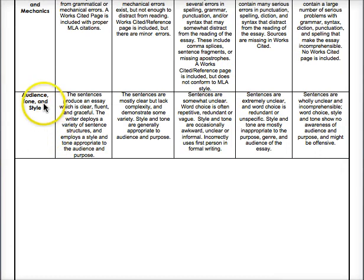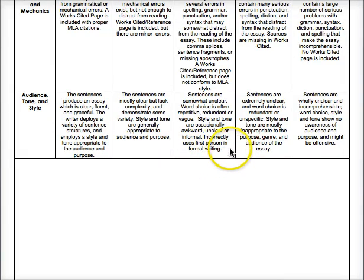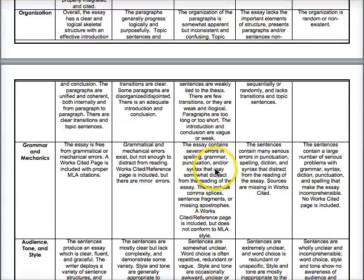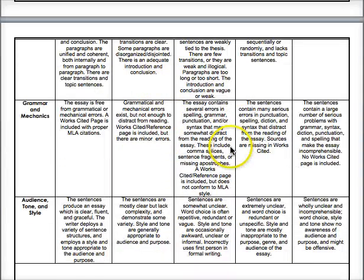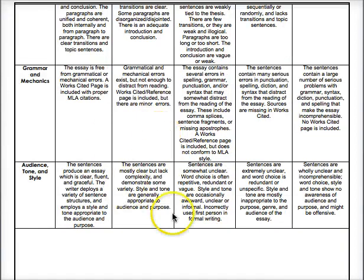The last rubric category is audience, tone, and style — whether your writing is clear and uses language appropriately for the expected academic audience. Using first person in literary analysis is frowned upon, for example. Look through the rubric and the English department style sheet to get a clear idea of what's expected at this level. If you have any questions about the syllabus or how assignments are evaluated, feel free to email me.